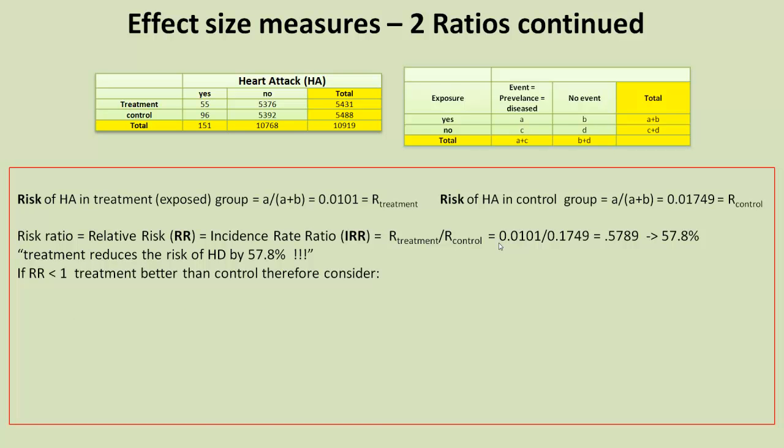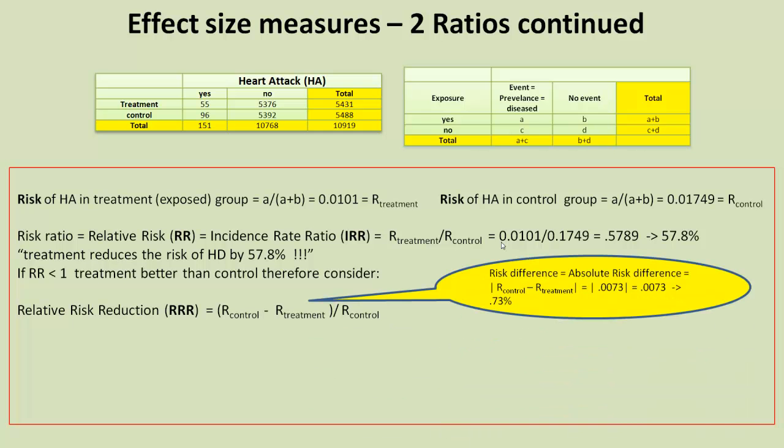And if this relative risk is less than 1, it means that the treatment is better than the control. Therefore, we consider another measure called the relative risk reduction. Relative risk reduction basically divides that value by the control risk. So, we have at the top the 0.73%. And we just divide it by our control value of 0.017. Or we can do it another way, which is 1 minus the relative risk. And we end up with 42%.